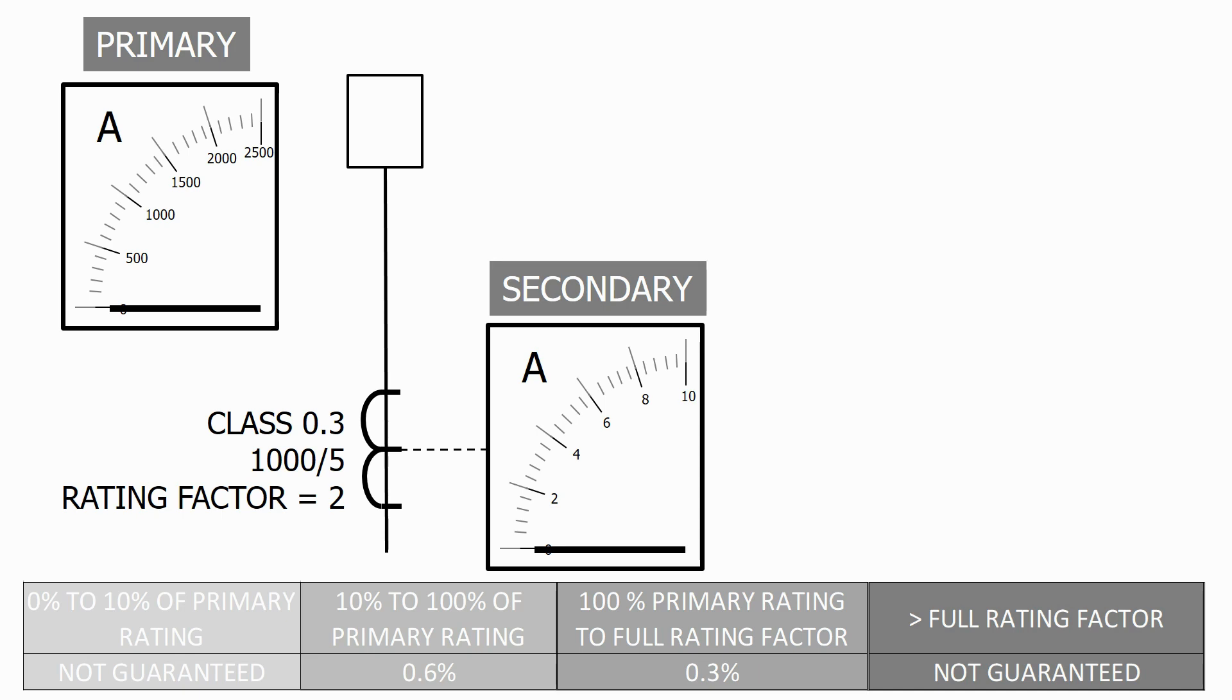To see what's happening to the current transformer over its full range let's look at the CT's magnetisation curve. As we know from a previous module, the first part of the curve is when the CT becomes magnetised. This part of the curve is obviously non-linear and the current that appears on the secondary output of the CT will not be an accurate representation of the current flowing through the primary.